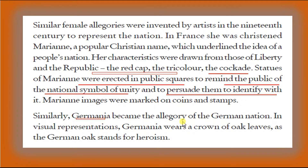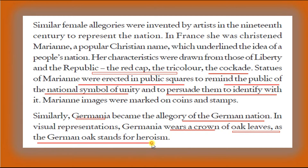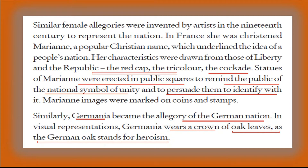Similarly, Germania became the allegory of the German nation. Germania wears a crown of oak leaves, as the German oak stands for heroism. If you remember during the Olympics medallion ceremony, they make a crown of oak leaves — oak stands as a sign of heroism. Please remember: Germania became an allegory of the German nation, and the oak leaves symbolize heroism.